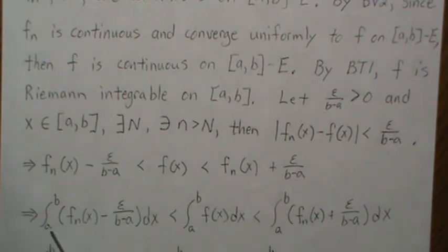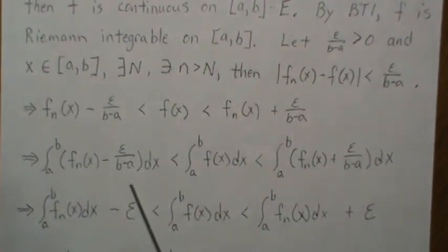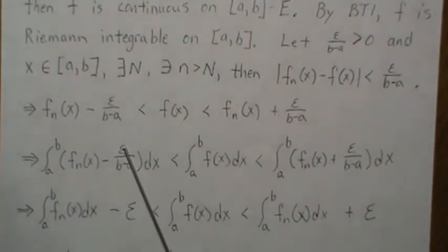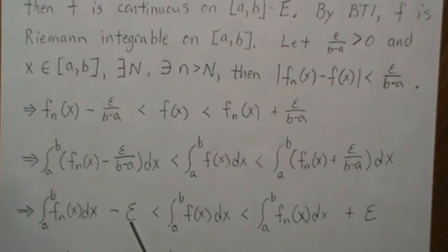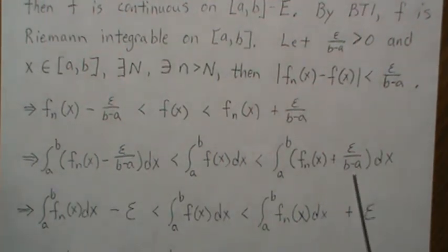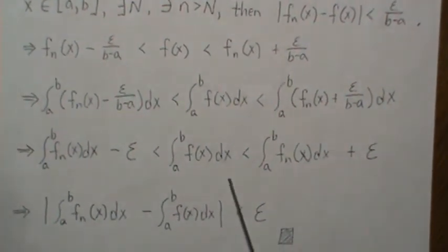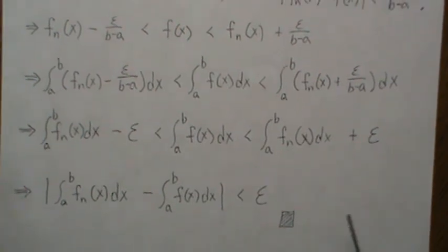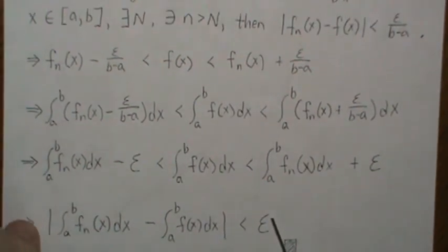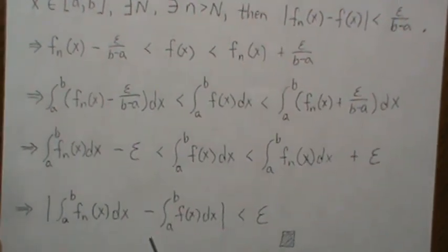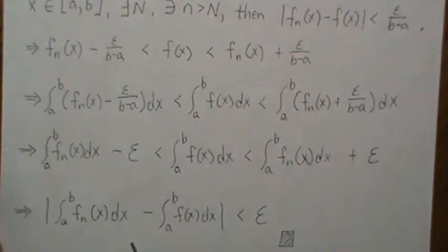If we take the integral sign of each one of these, this inequality is true. Since integration is a linear operator, we can take it into here and into here. This integrates to epsilon over (b minus a) times (b minus a), so those cancel and we're left with epsilon. We could subtract this to both sides and then we take the absolute value because we have minus epsilon plus epsilon.